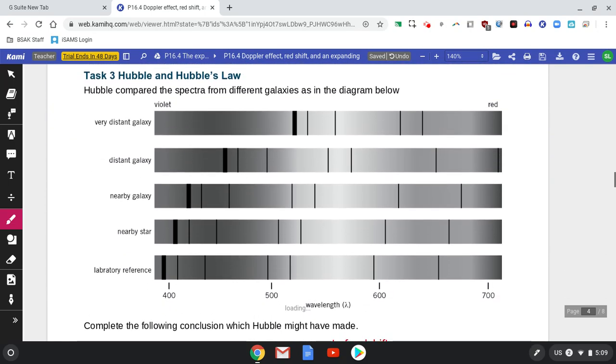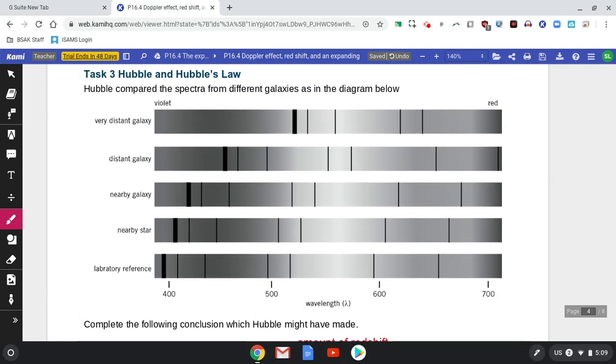Now this is the really important bit because there you have it, there's the same lines for hydrogen. Nearby star, small amount of redshift. Nearby galaxy, a little bit more. Distant galaxy, a little bit more redshift. And the very distant galaxies, these are really red shifted because...